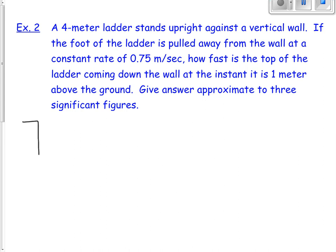First, we need to draw our picture. We have our wall, the ground, and we have our ladder. The ladder is not changing lengths, so the ladder is four meters - that's a constant. But we will need a variable for the horizontal and the vertical because that is changing. The horizontal is getting bigger as the ladder is getting pulled away at the bottom, and the vertical is getting smaller. We're getting a rate of 0.75 meters per second in the horizontal, so that's dx/dt.